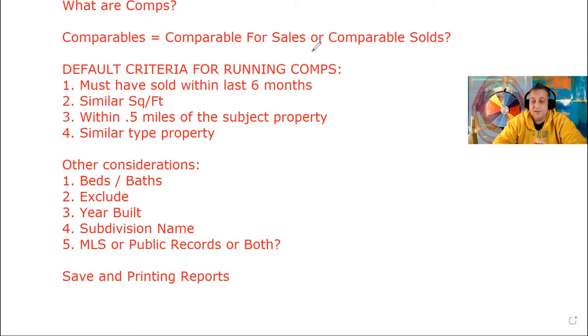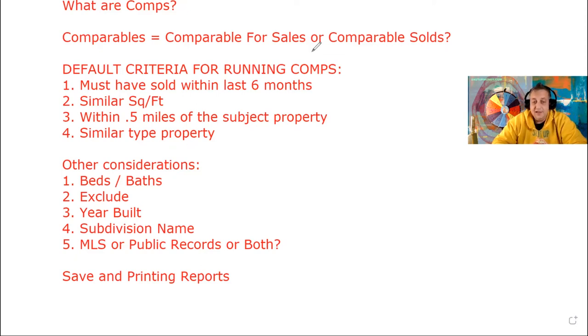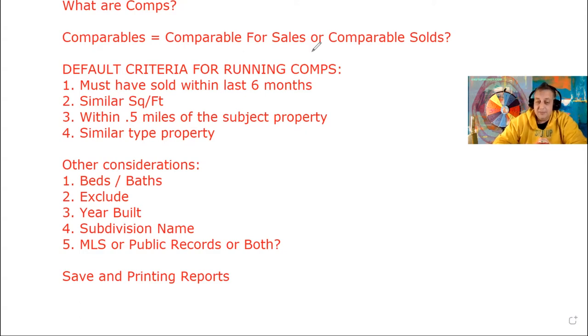Consideration number four: subdivision name. If you can get comparables in the same subdivision, great — but at least get within a half mile. Number five: MLS or public record, or both. I recommend doing both. Now I want to show you how you can save these comps and create your own report, so let's jump right over to PropStream.